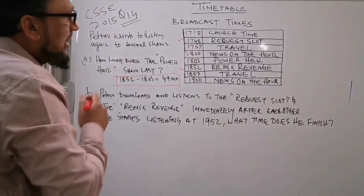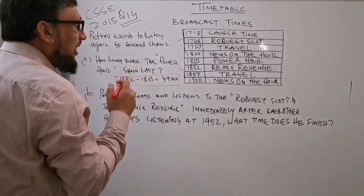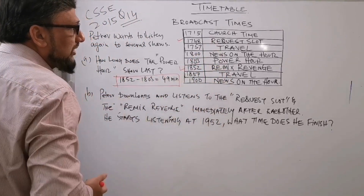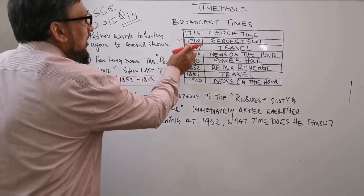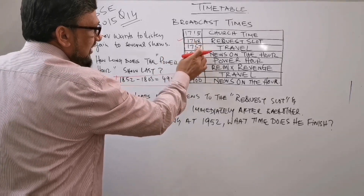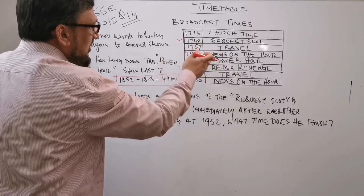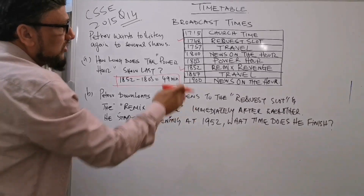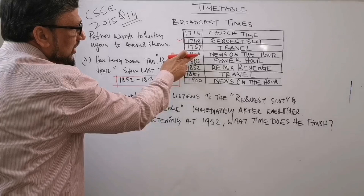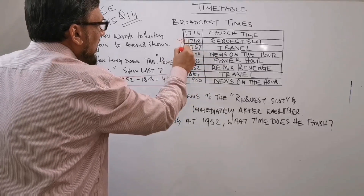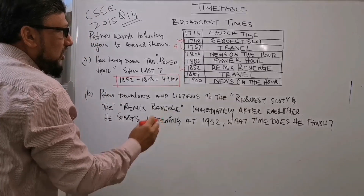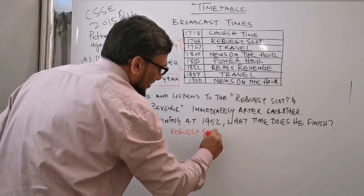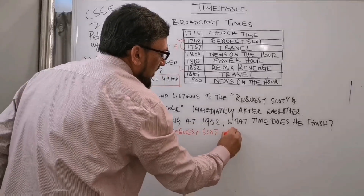So basically, Petrov downloads two programs: the Request Slot and the Remix Revenge. He starts listening at 1952. First, let me check the start and finish times — how long are the Request Slot and Remix Revenge programs? The Request Slot starts at 1748 and the next program, Travel News, starts at 1757, so the Request Slot lasts only nine minutes — from 48 to 57, which is nine minutes.